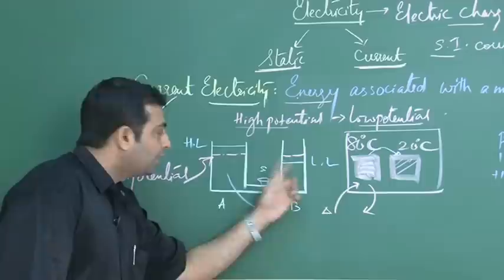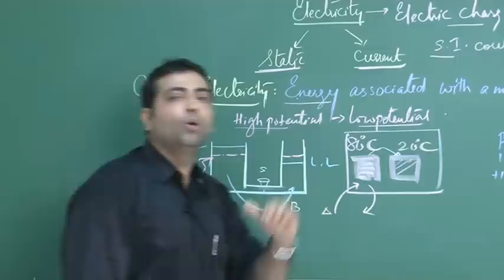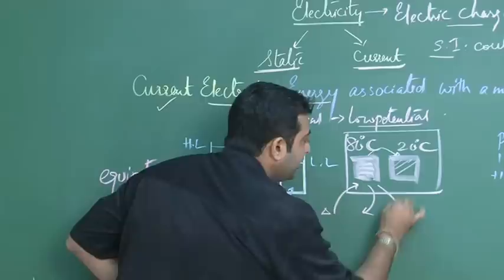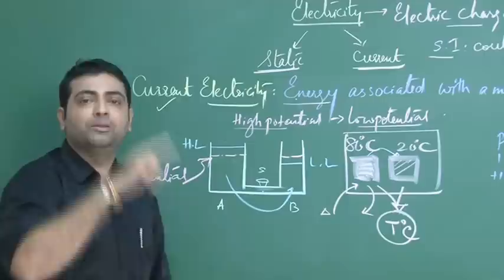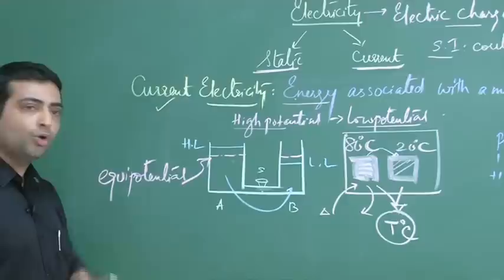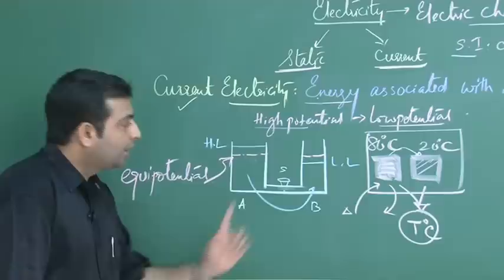Over here, energy flows from a higher temperature to a lower temperature. Once when the two bodies reach a common temperature T degrees Celsius, the two bodies attain thermal equilibrium. Will there be flow of heat energy? No. Will there be flow of water? No. Because the two levels have become equipotential.